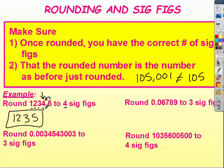I need to double check that I have the correct number of sig figs. That's 1, 2, 3, 4. So that's good. And this is the same number, just rounded. So that is good.